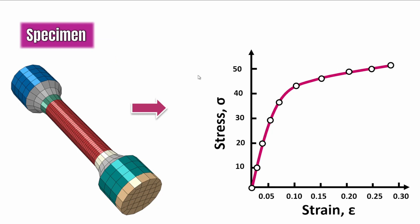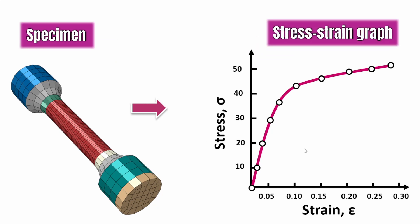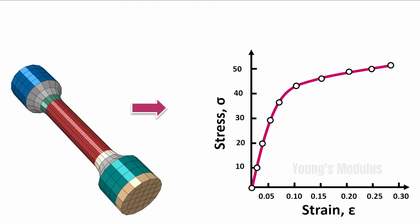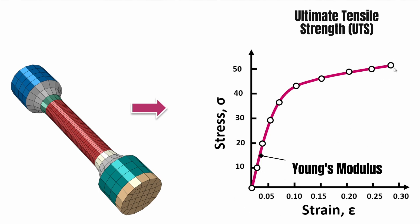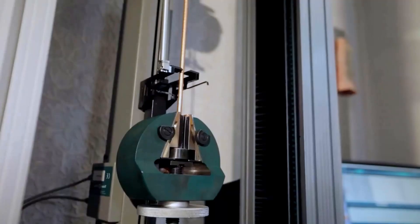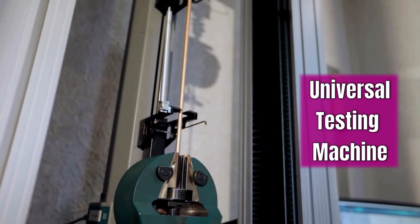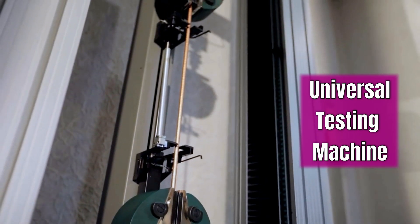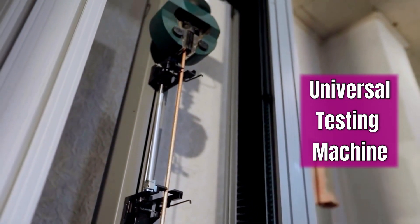Traditionally, when you want to do an experiment, you've got a specimen and you want to generate a stress-strain response. From that stress-strain response, you can generate the Young's modulus based on the elastic region, and based on the ultimate tensile stress, find the yield stress or the fracture behaviour of the material. This is usually done within a laboratory environment using a universal tensile testing machine, and it's quite straightforward.